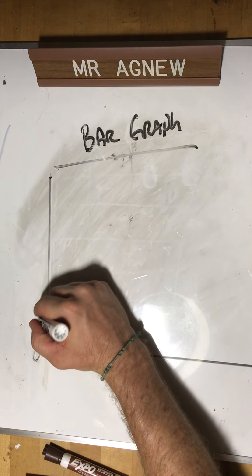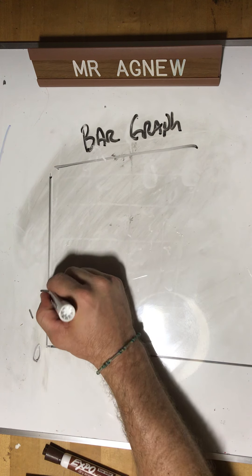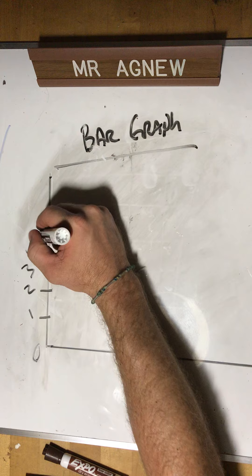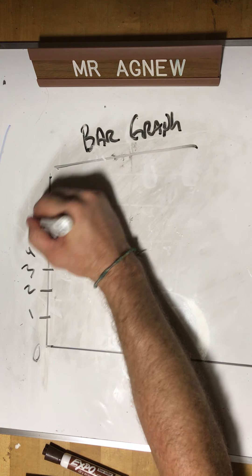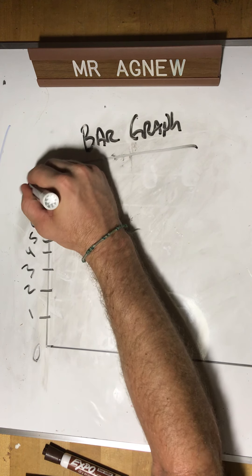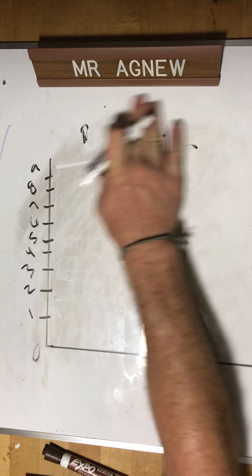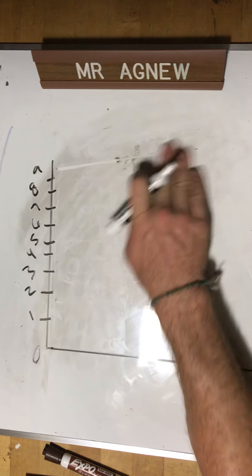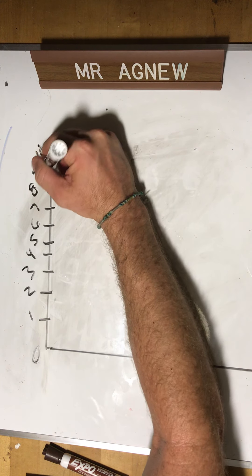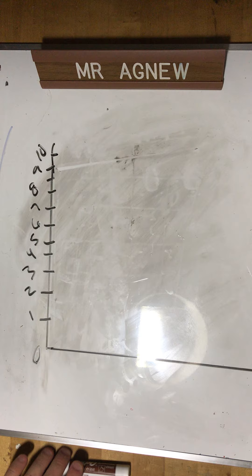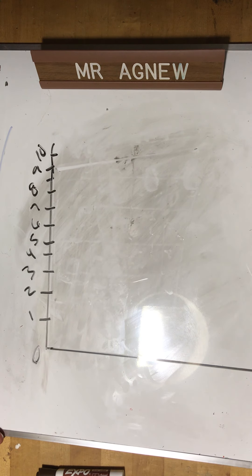On this one I'm gonna start with zero. This is gonna be one, two, three, four, five, six, seven, eight, nine. You can go as high as you want to. I'm gonna go up to ten. I hope I don't have any more than ten fruits.